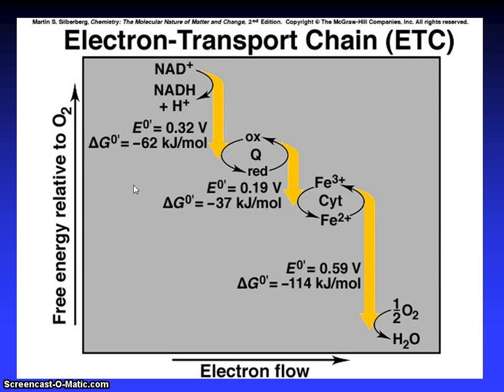Electron transport chain, ETC. You can see free energy relative to O2 and electron flow. NAD+ to NADH + H+, E naught 0.32 volt, del G naught equals minus 62 kJ per mole. Oxidation, reduction, coenzyme Q, E naught equals 0.19 volt, del G naught equals minus 37 kJ per mole. Fe3+ to Fe2+, cytochrome, and E naught equals 0.59 volt, del G naught equals minus 114 kJ per mole. Half O2 to give H2O, electron flow.